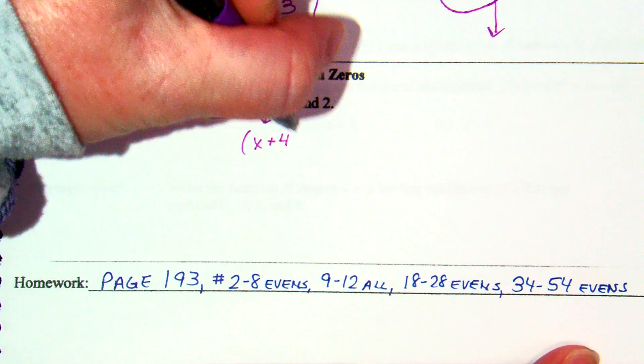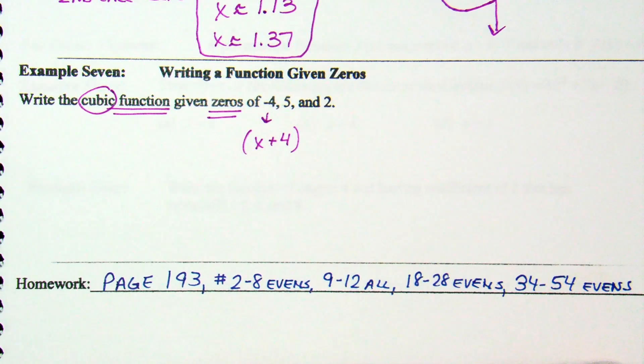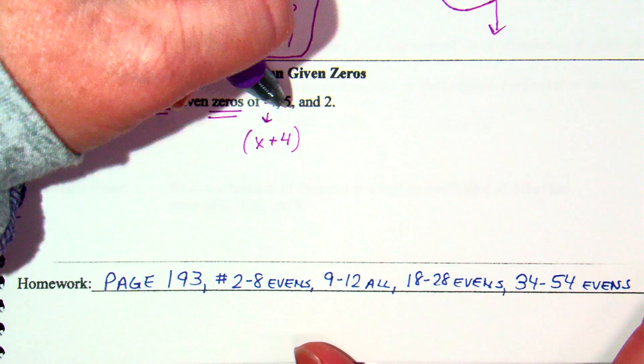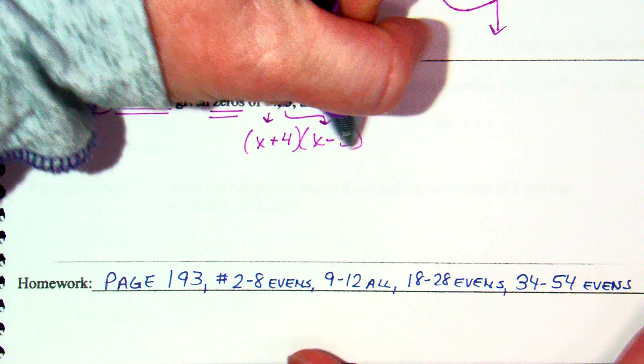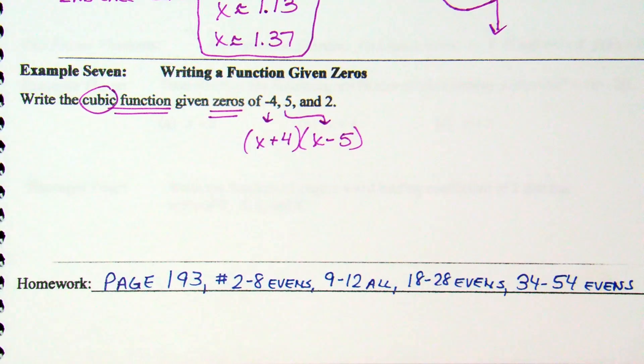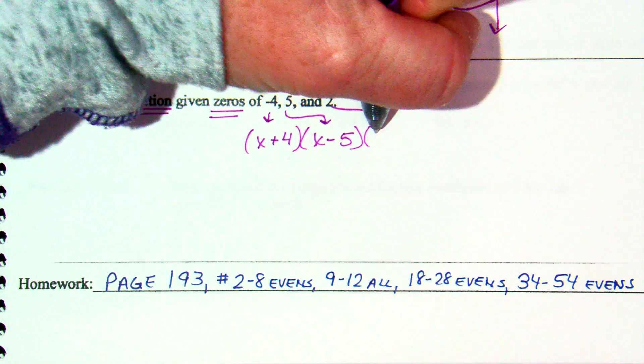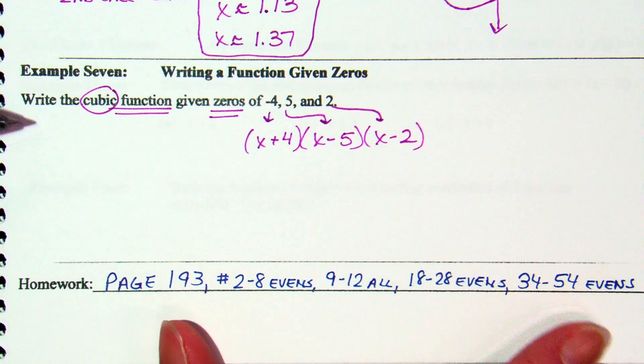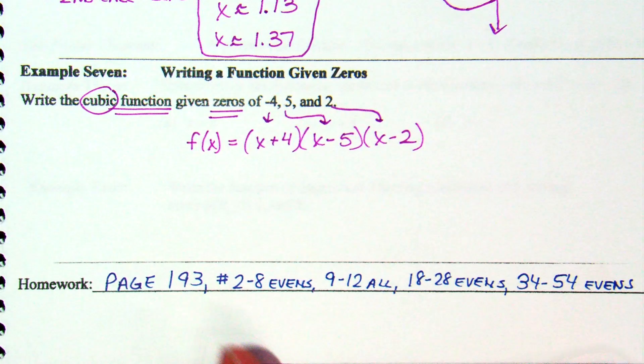A zero of negative 4 looks like what in an equation setting? It's a factor of x plus 4, correct? We're kind of reversing the process, right? A zero of 5 in an equation setting comes from x minus 5. So, think. What would I have to set equal to 0 to get these zeros? And a zero of 2 would look like x minus 2.